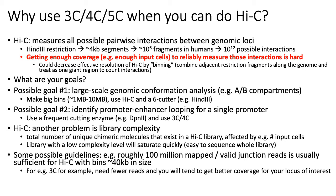Another possible problem with Hi-C, related to getting enough coverage, is that library complexity is heavily affected by the amount of input material you have. Library complexity generally refers to the number of unique molecules in your library — for Hi-C, that means how many unique chimeric molecules you have. That is really affected by the number of input cells. If your number of input cells is small, you typically need to do PCR amplification, which may lead to lower library complexity. If you have low library complexity, no matter how deep you sequence, you're still not going to get very good coverage of your interactions.